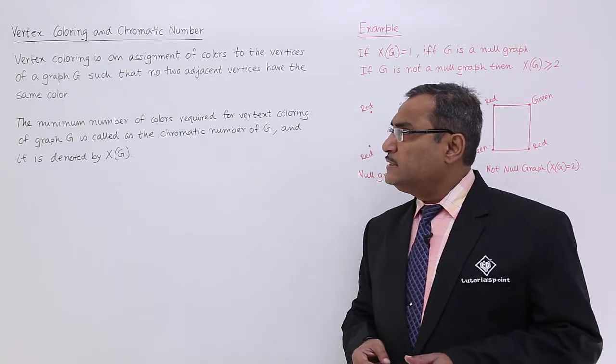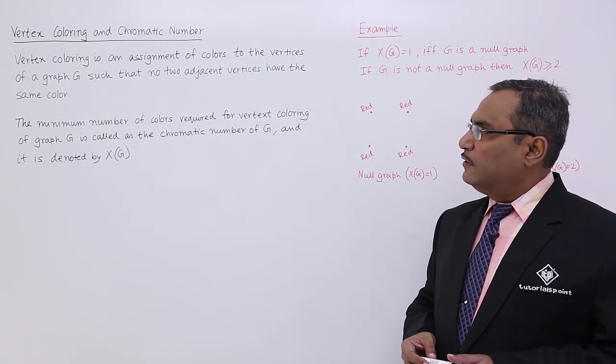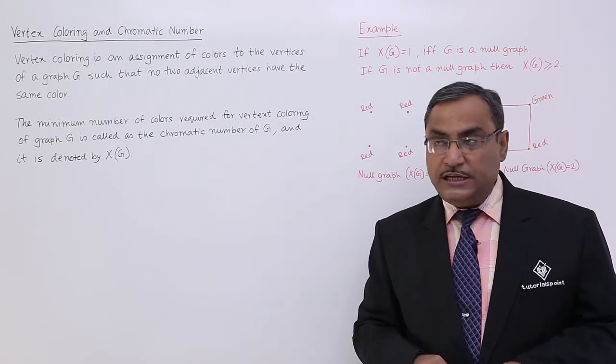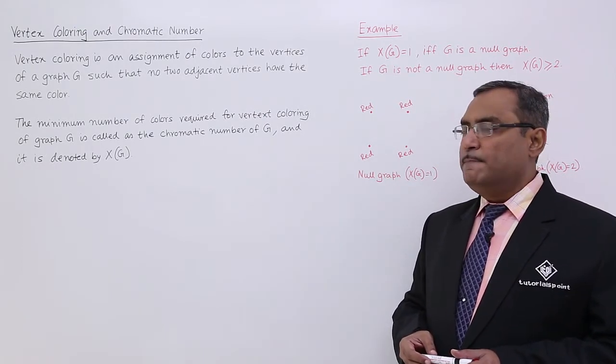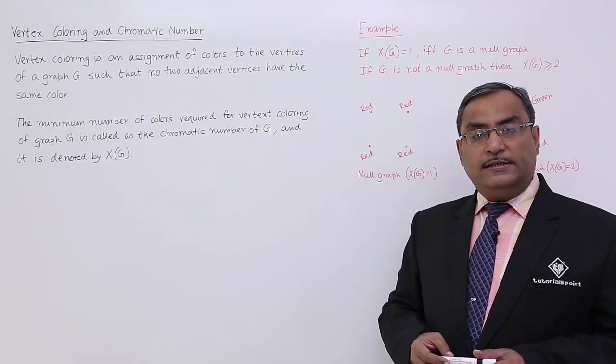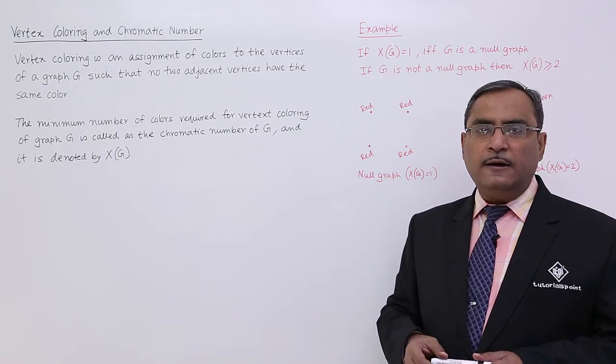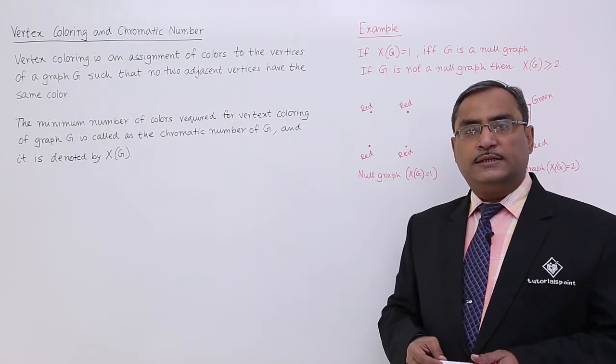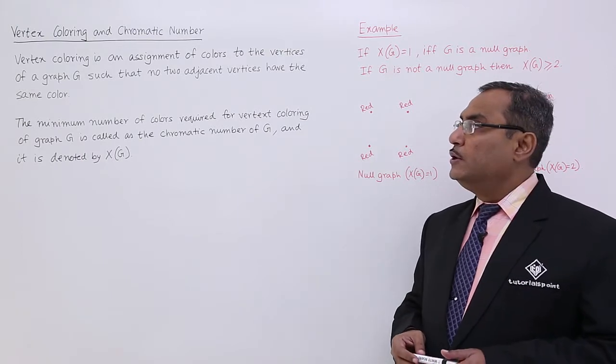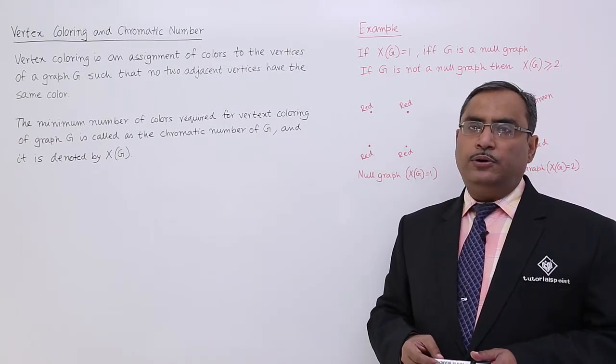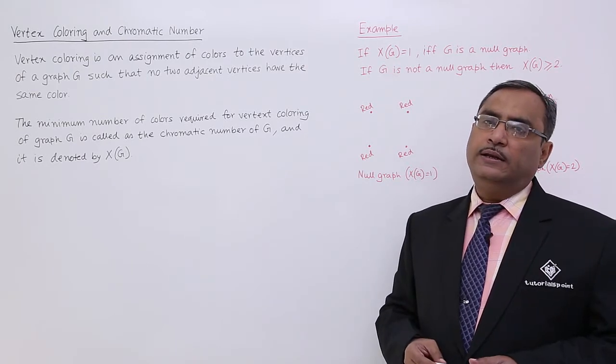Vertex coloring is an assignment of colors to the vertices of a graph G such that no two adjacent vertices have the same color. Adjacent vertices means we know that there will be a direct edge in between the vertices. In those cases, the vertices will be known as adjacent. Adjacent vertices will not have the same color and that is the main constraint in graph coloring.